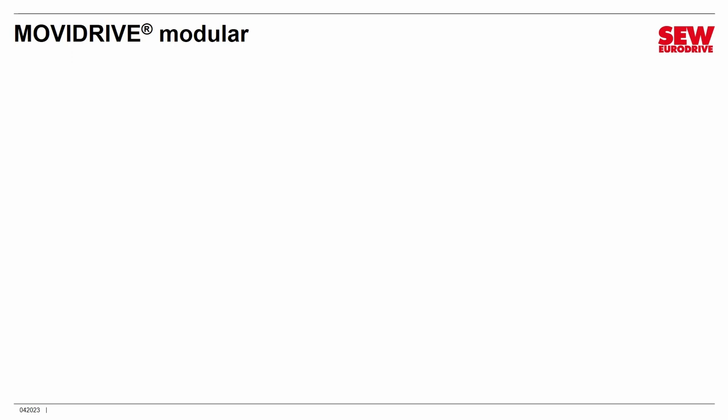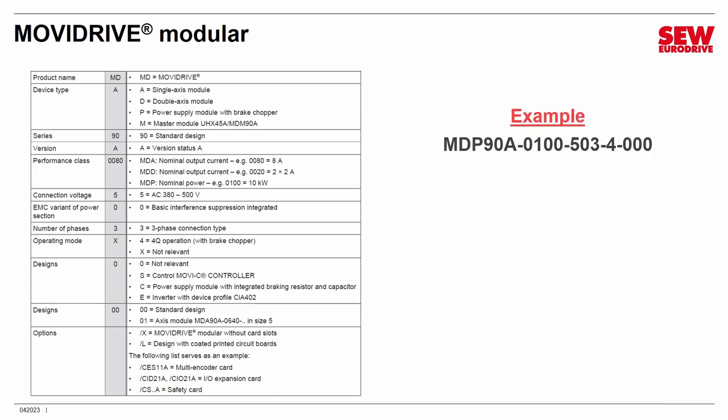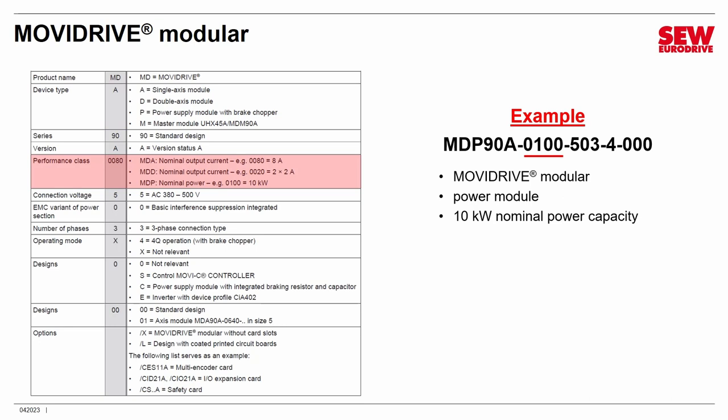One more nomenclature exercise: MDP 90A-01-00-503-4-000. MD means MoviDrive and P means power supply module — this is the nomenclature for a MoviDrive Modular's power module, which all MoviDrive Modulars must have as part of them. These are rated in kilowatts — pretty much the only MoVC control cabinet product that gets a kilowatt rather than an ampere rating. Using the same decimal point rule, the rating here is 10.0 kilowatts, so this is a 10 kW power supply.